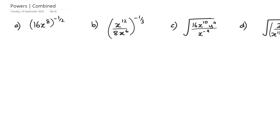With the first question here, what I need to realize is that I've got to the power of negative half. A little trick I'm going to show you is this: if you want to get rid of that negative really quickly, what you can do is flip whatever's inside the bracket upside down. So 16x to the power of 8 can actually be written as a fraction divided by 1, meaning I can rewrite this as 1 over 16x to the power of 8, to the power of half. Notice I've gotten rid of the negative by flipping whatever's inside the bracket.